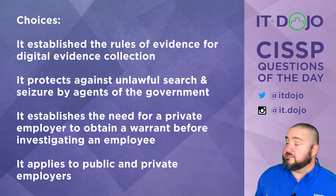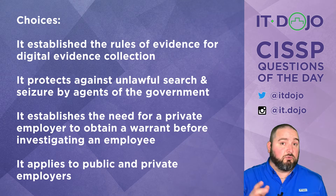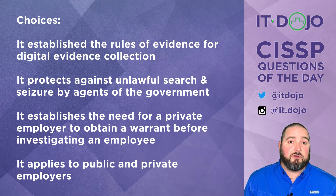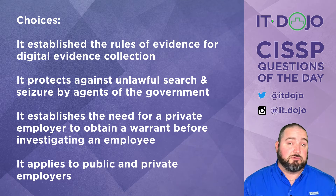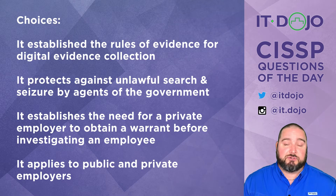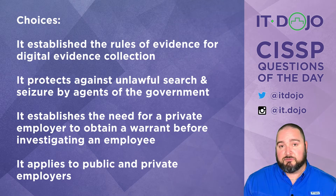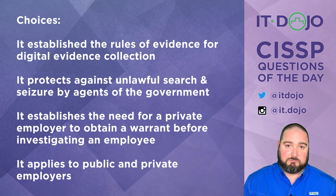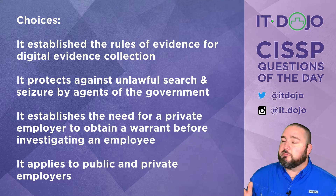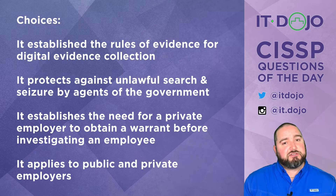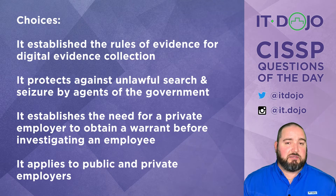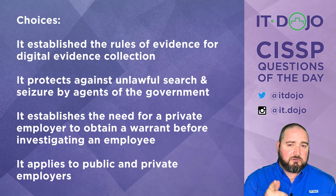The first choice on the list says it establishes the rules of evidence for evidence collection for forensic investigations. That is not true — the Federal Rules of Evidence is going to cover such things. The second item on the list says that the Fourth Amendment protects against illegal search and seizure by agents of the government. This is absolutely what the Fourth Amendment does.